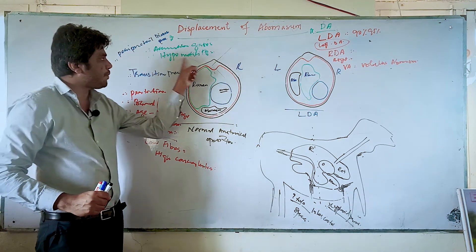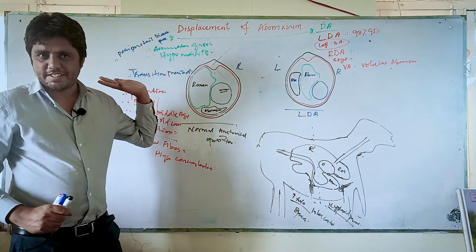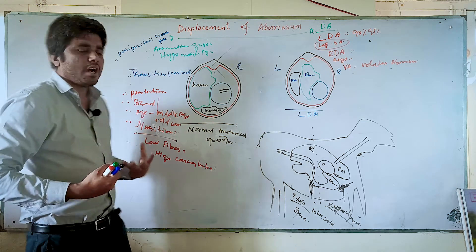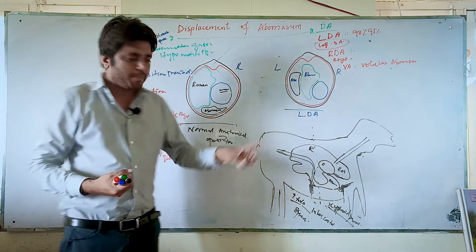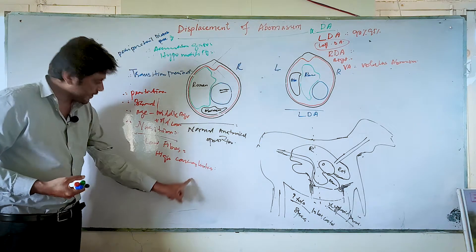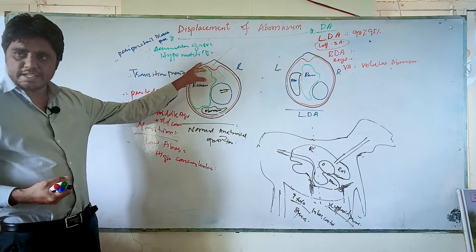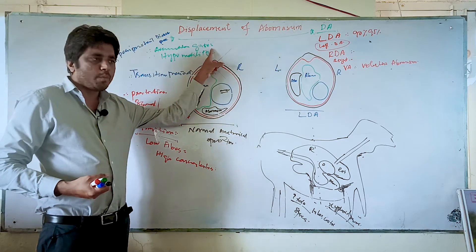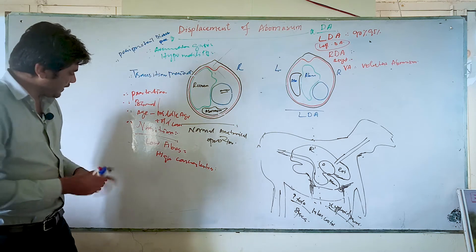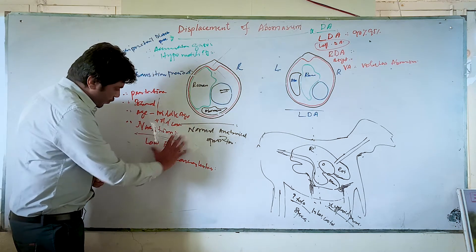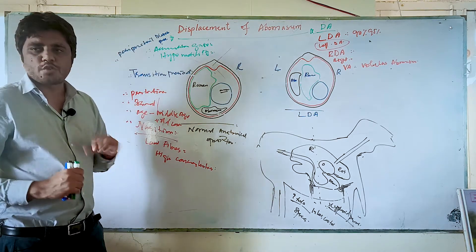You know these risk factors at any stage are associated with accumulation of gases and hypomotility. This is the pathogenesis. How does this happen? There will be hypomotility and there will be accumulation of gases. But these are the risk factors. They will cause hypomotility and accumulation of gases.